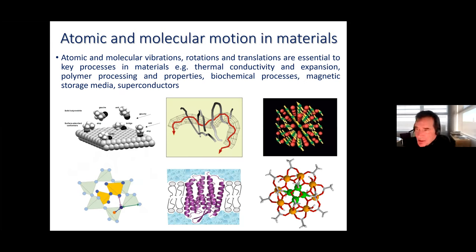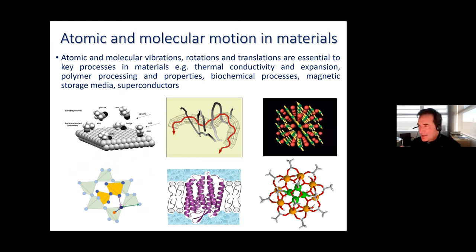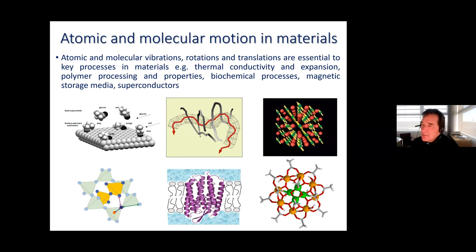The third reason to use neutrons is their energy. Thermal neutrons are produced by passing them through a moderator at room temperature — typically a large volume of liquid such as H₂O or D₂O — so it should come as no surprise that the neutrons emerging after thermalizing with the medium have an energy comparable to the energy of molecular motion in fluids. This means they have exactly the right energy to probe such processes.